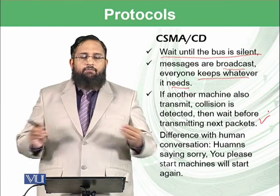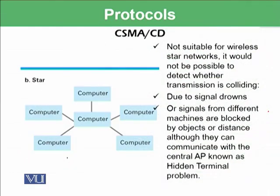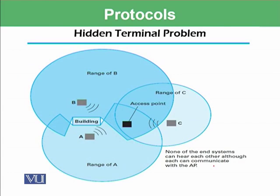After that time, it will again transmit the messages, and again a collision can occur. This is not suitable for wireless star networks or star topology. If a computer wants to send messages to an access point, it is not always possible to identify the collision. If two computers are simultaneously sending messages, the collision cannot be detected due to signal drowning. Such a concept is known as the hidden terminal problem, which is visualized in the next slide.